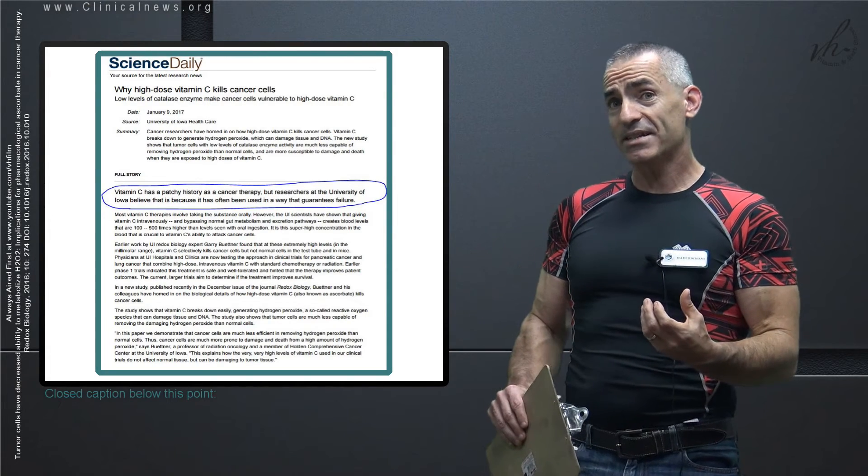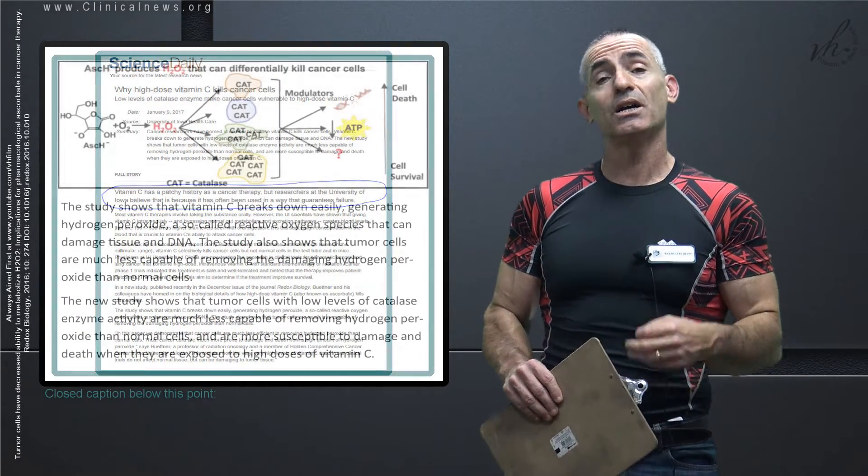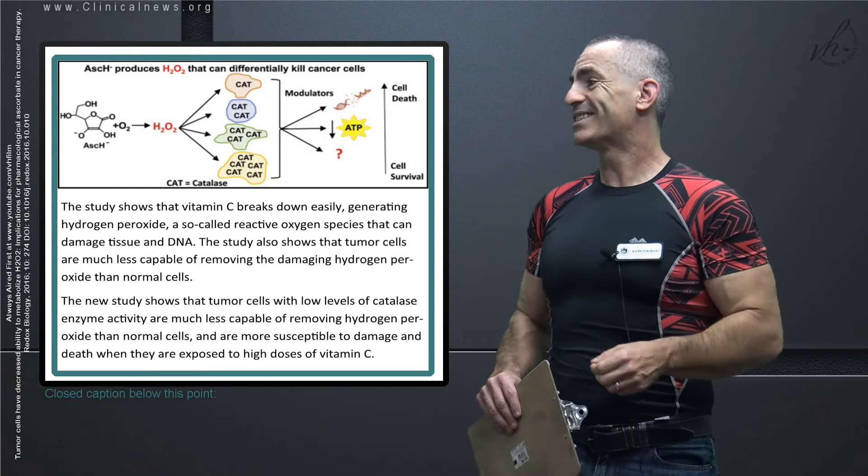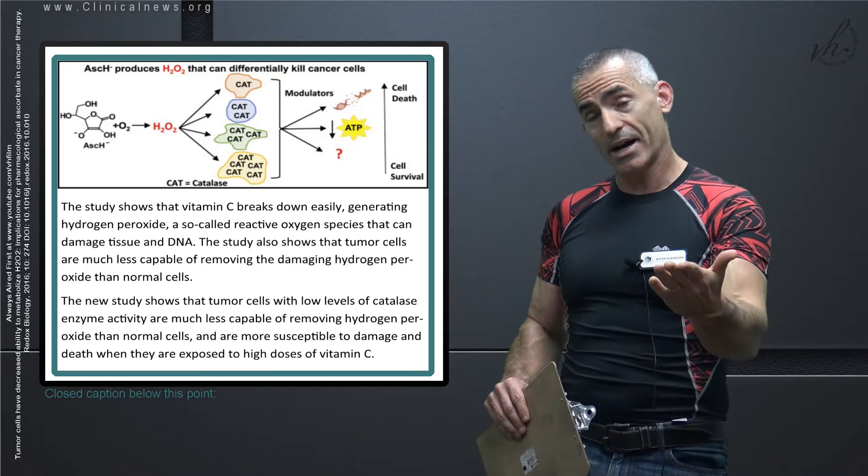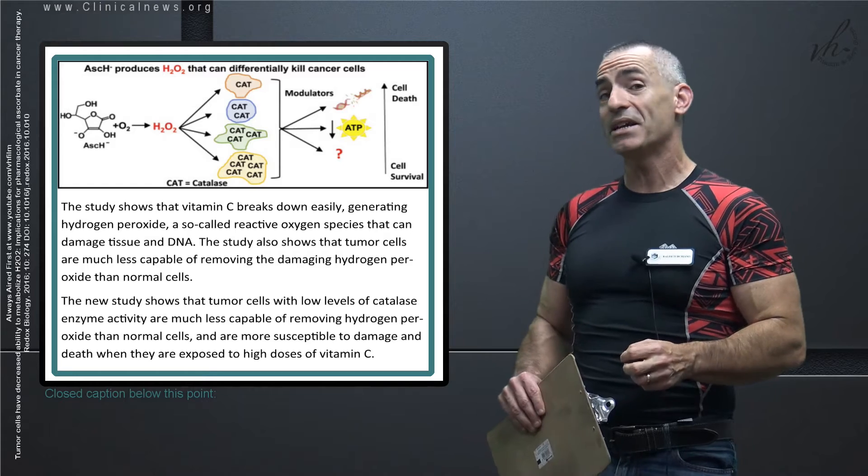How does exactly this vitamin C attack cancer cells? It's actually due to the production of something called hydrogen peroxide. The study shows that vitamin C breaks down easily generating hydrogen peroxide, a so-called reactive oxygen species that could damage tissue and DNA.